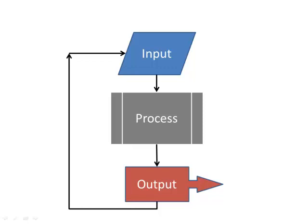A digital thermostat is very similar in that it takes a preset temperature from the user — that's its input. It checks the actual temperature, so it measures something — that's more input, stuff coming into the computer. It compares the actual temperature to a preset temperature and then makes a decision about what to do with the furnace — that's the processing part. And then last, it turns the furnace on or off — that's the output part. Once it finishes the output, it goes right back up and does the whole process over again.